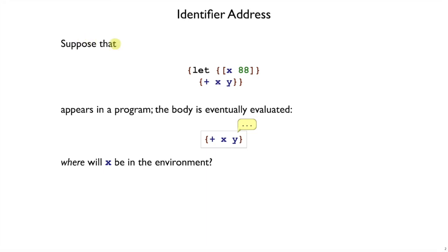Suppose we have a big program that includes somewhere in it this let expression. And let's suppose this let expression does get evaluated, so somewhere along the way our interpreter reaches this let expression, and then eventually it reaches the plus xy expression, and in that process it reaches the x expression.